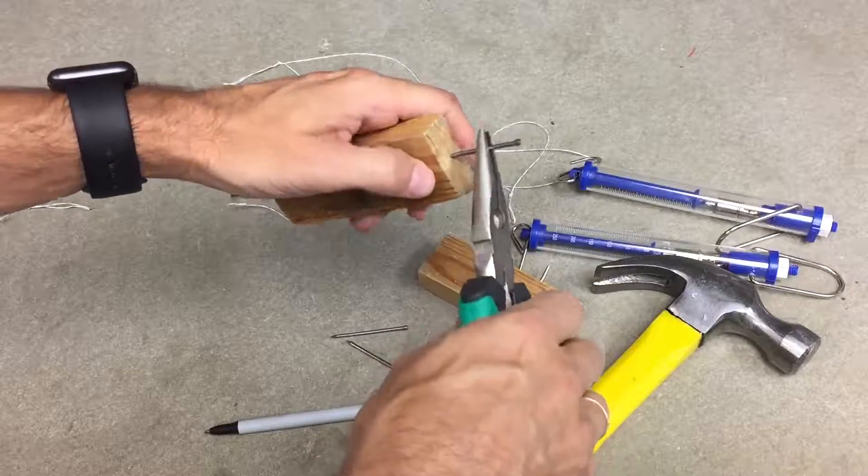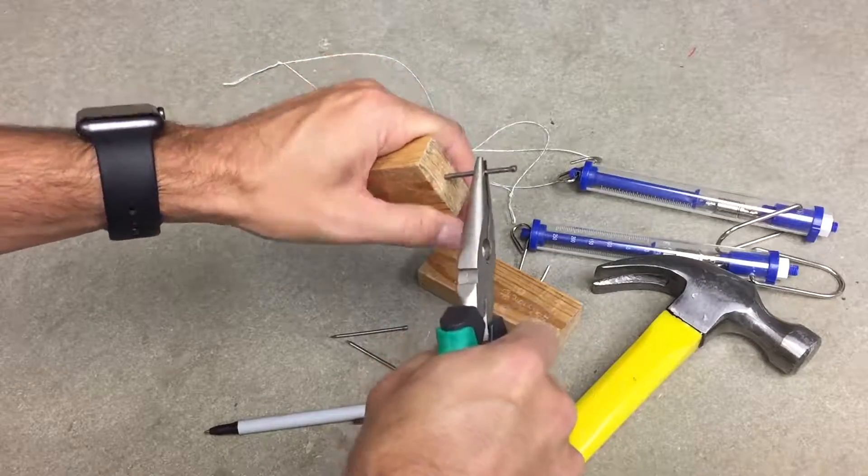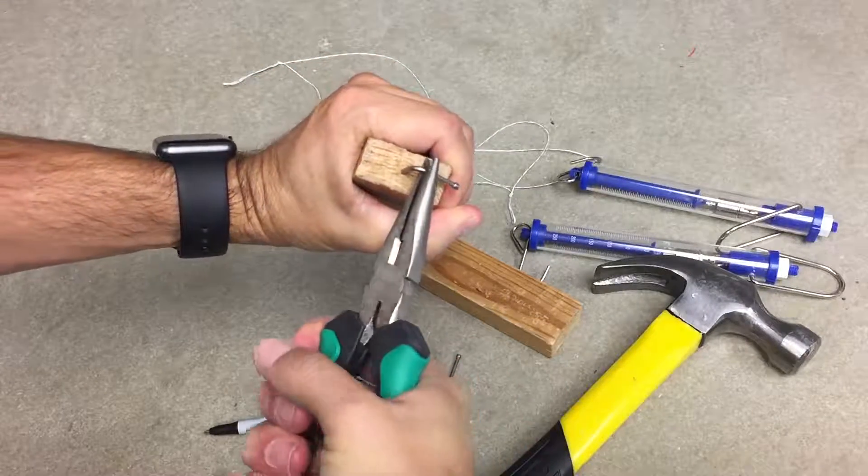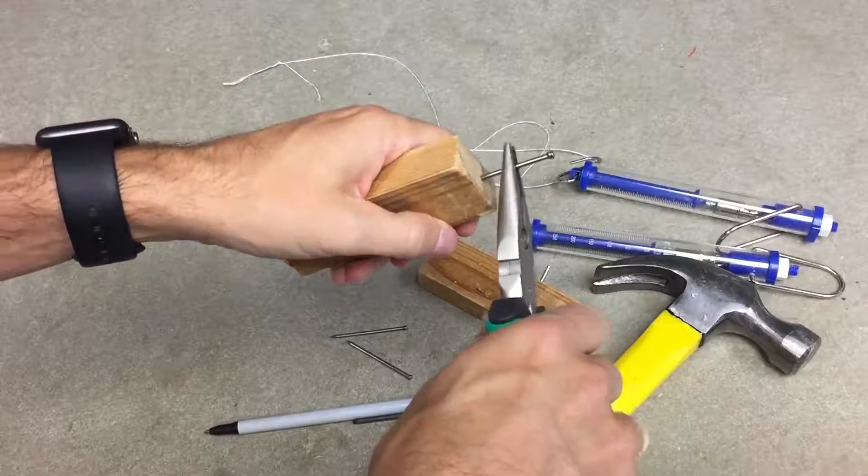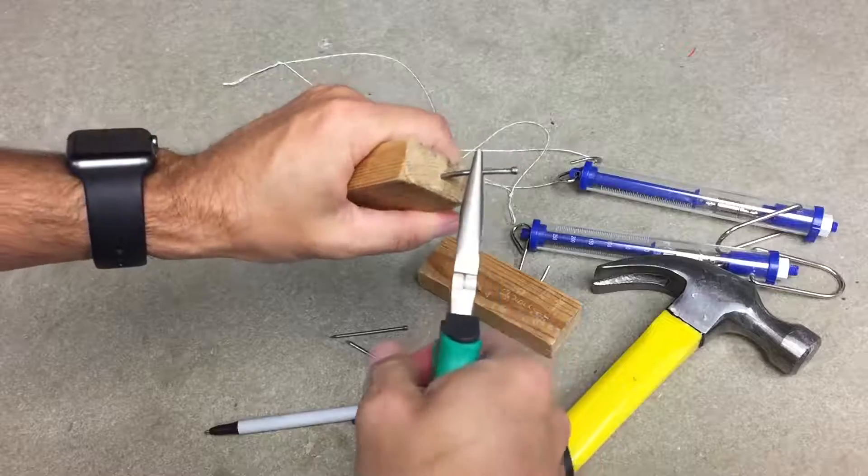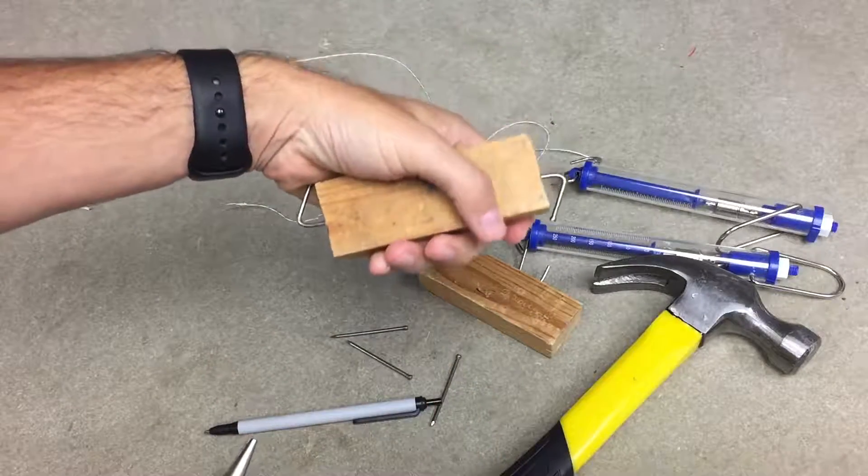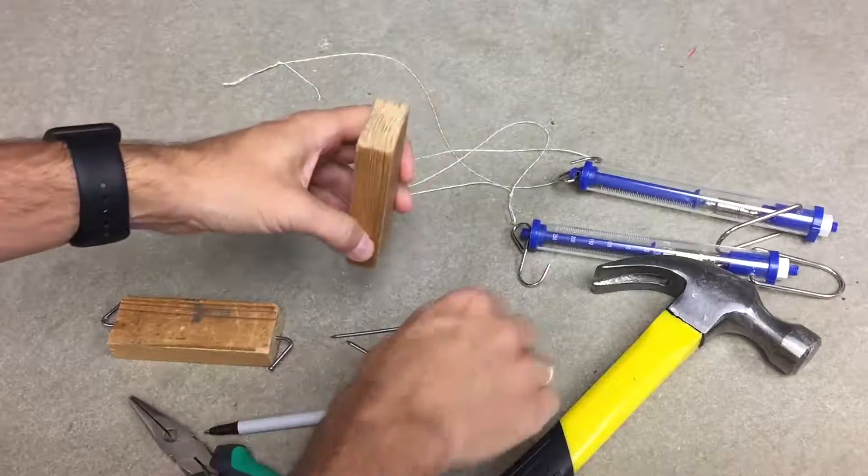So I'm gonna take this and I'm gonna bend it. That's good enough. Now I can hook a string on there. Okay, now this one, all I need is one hook like this.